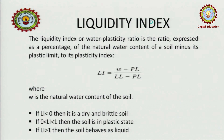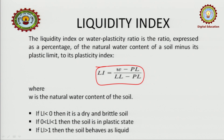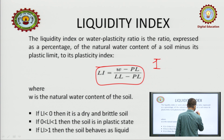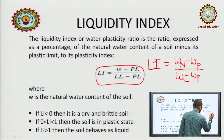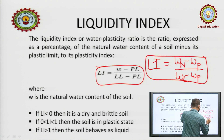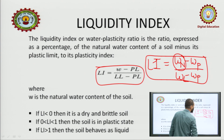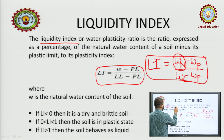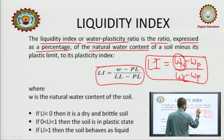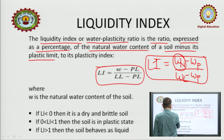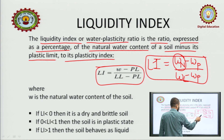Now let us move to liquidity index, which is also nearly similar to consistency index but the formula is different. Liquidity index LI = (WN − WP) / (WL − WP), where WL is liquid limit, WP is plastic limit, and WN is the natural water content. The liquidity index is the ratio, expressed as percentage, of the natural water content minus the plastic limit to the plasticity index.